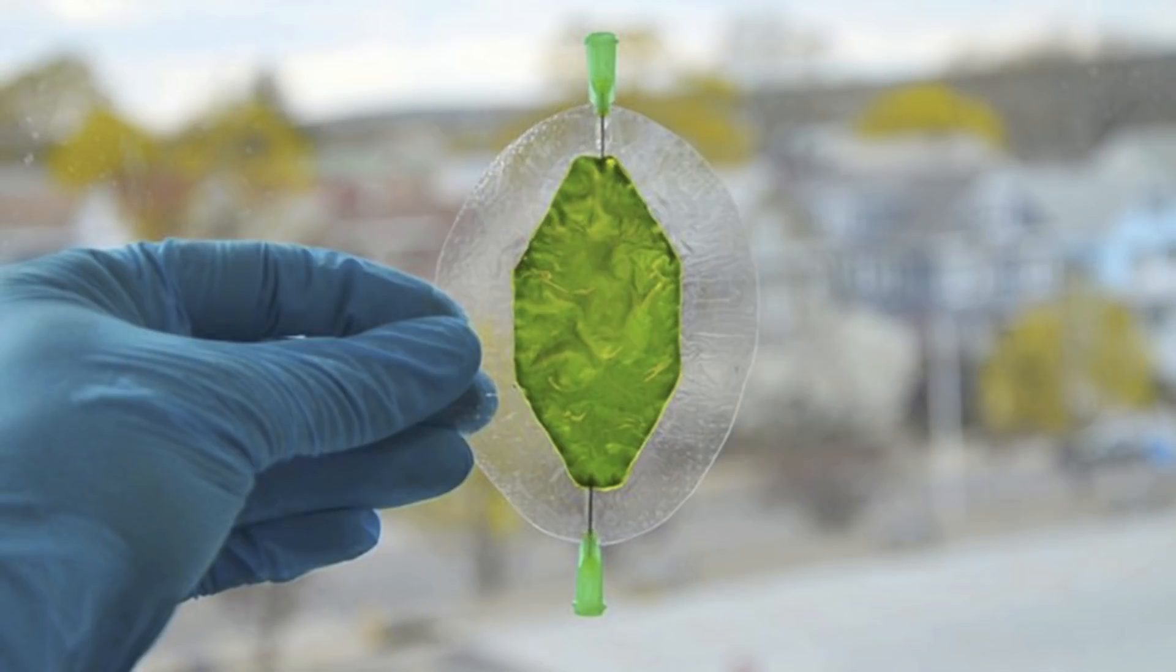Chloroplasts are membrane-wrapped organelles. As such, they depend on various cellular pathways that cycle membranes and proteins to keep healthy. So once you put them out of their environment, they'll stop working.